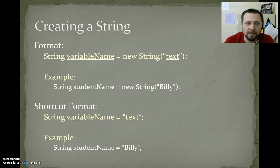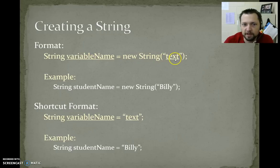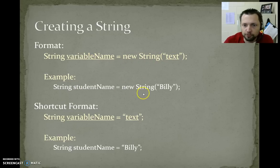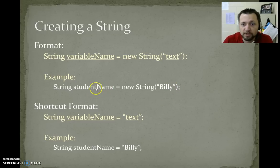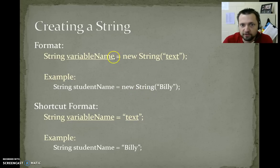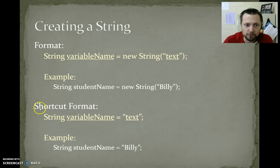The format for creating a string: String variable name equals new string text. For example, String studentName equals new string, parenthesis, "Billy", parenthesis — notice Billy's in quotes. You've probably never created a string this way. Internally, that's how strings are created. Usually we use the shortcut.